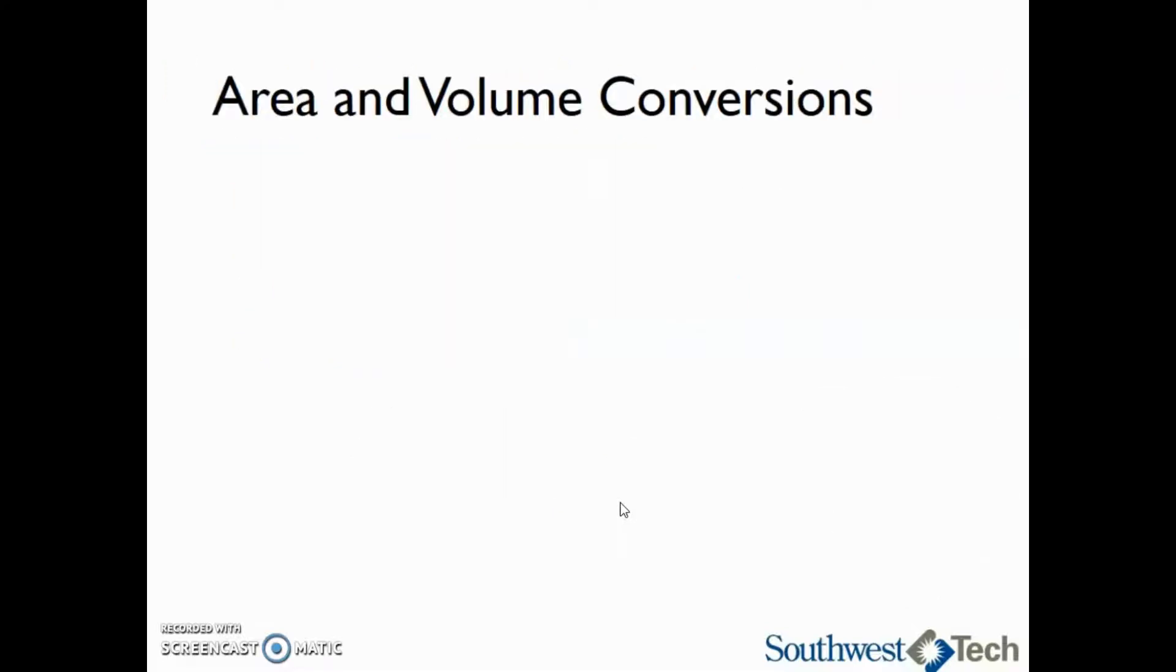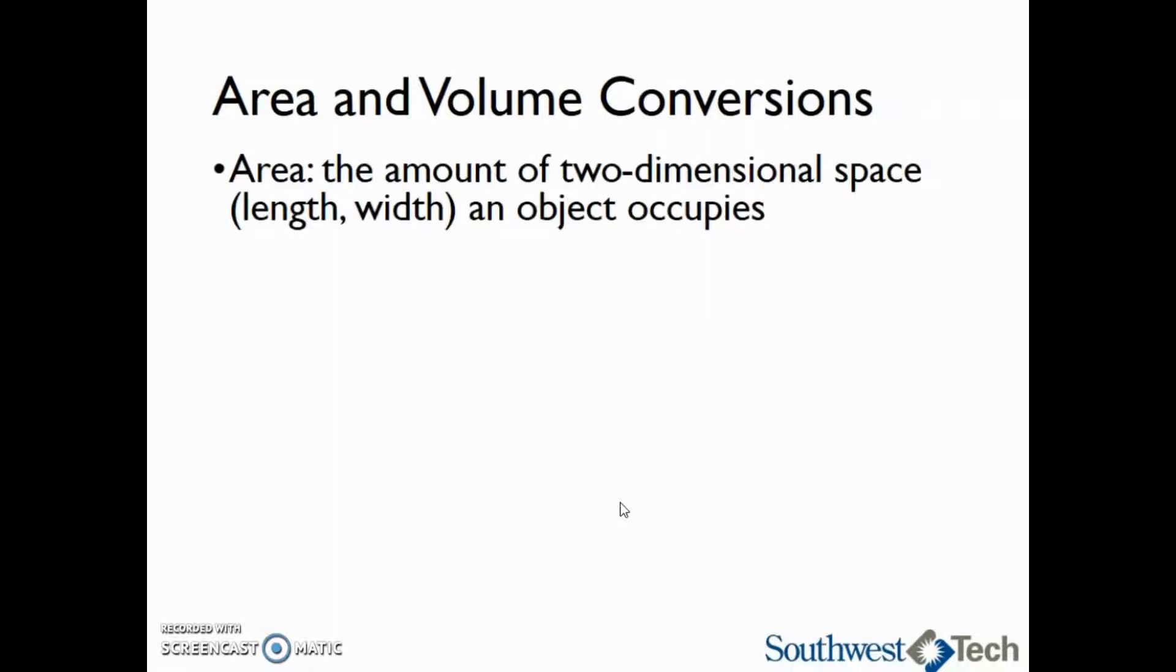Now we're going to talk a little bit about area and volume, and then we will look at one of these conversions as well. So area is just the amount of two-dimensional space, the length and the width, an object occupies. So if we are looking at a basic rectangle, area is going to be length times the width.